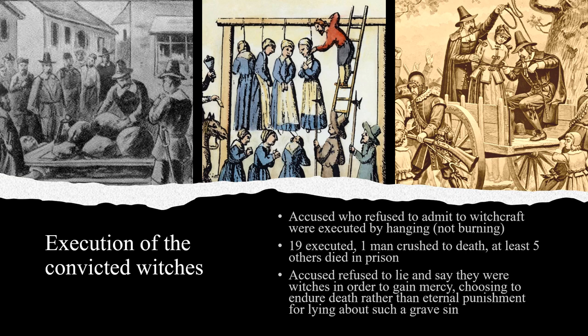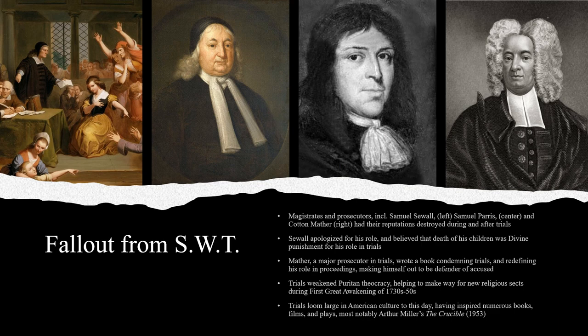The Salem witch trials came to an end in the fall of 1692 as public opinion in New England turned against the trials, though there were additional trials in early 1693. In the years after the famous Salem witch trials, the judges, prosecutors, and supporters of the courts did everything they could to disassociate themselves from the bloody affair. Samuel Sewell, the Salem magistrate, apologized for his role in the trials, and believed that the death of his children was punishment from God for his role as judge. Reverend Cotton Mather, an early supporter of the trials and advocate of the use of spectral evidence, later condemned the trials as being violent, superstitious, and unchristian.